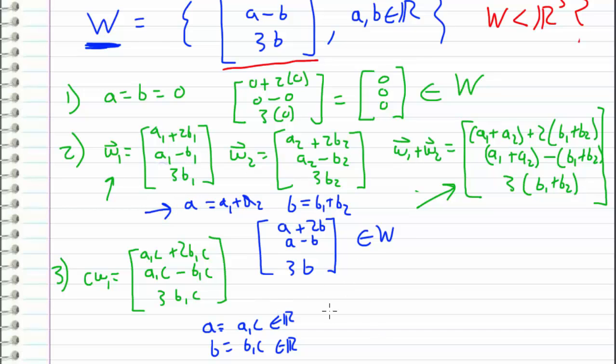So anyway, when we make the substitution, what we get is this becomes the vector A plus 2B, A minus B, and 3B, which again matches our form up here. And therefore, we can conclude that this is in fact an element of our subspace W. And therefore, it is closed under scalar multiplication. So since this subspace, as defined by the set, satisfies these three criteria, the three rules that every subspace must obey, since it satisfies those, we can conclude that W is in fact a subspace of R³.